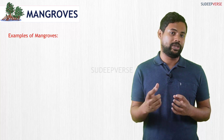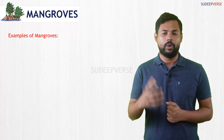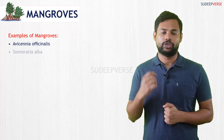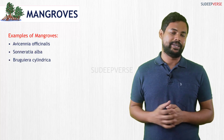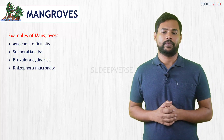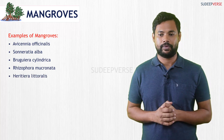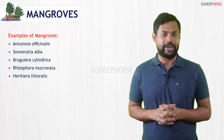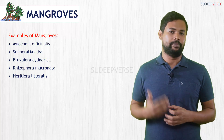Some important examples of mangroves — knowing these names is important as they can appear in mixed vegetation questions. Key examples are: Avicennia officinalis, Sonneratia alba, Bruguiera cylindrica, Rhizophora mucronata, and Aegiceras corniculatum. You don't have to memorize them, but be familiar enough to eliminate options.